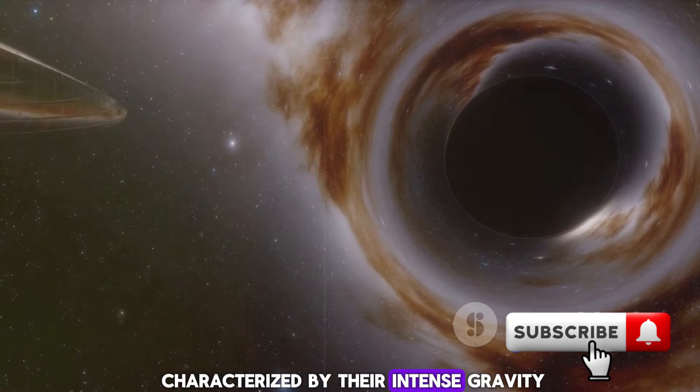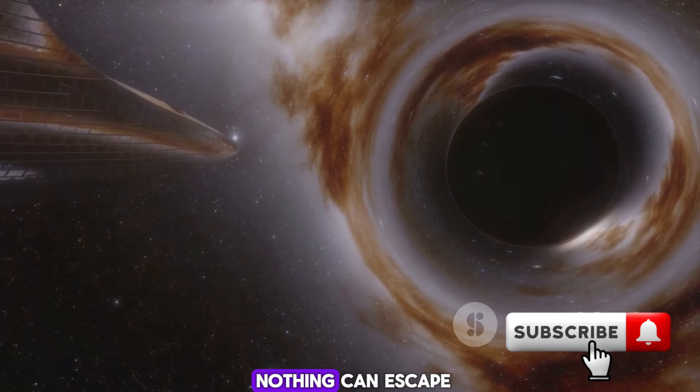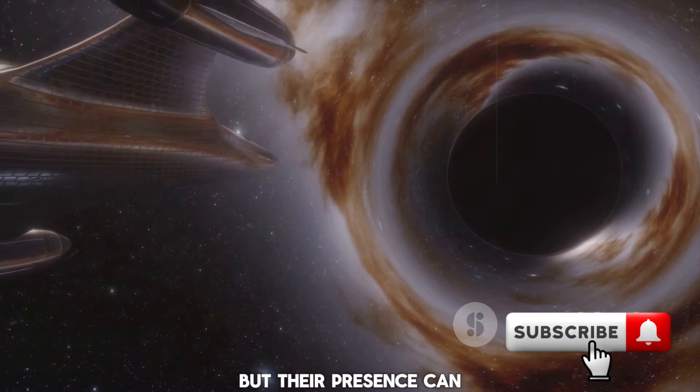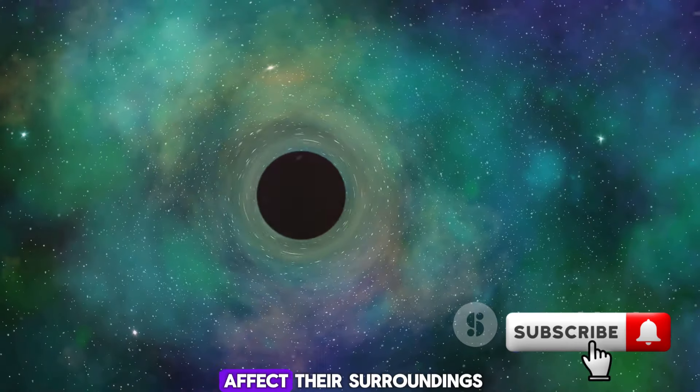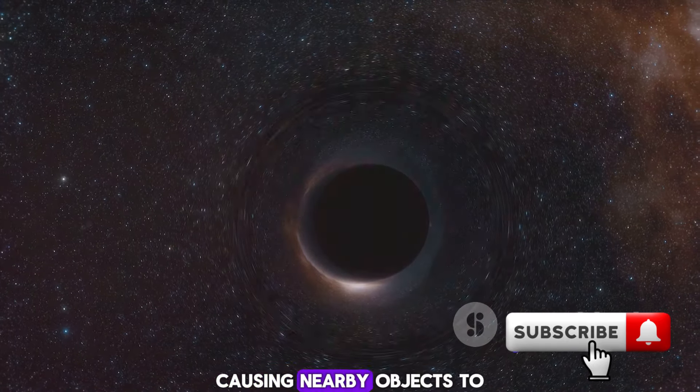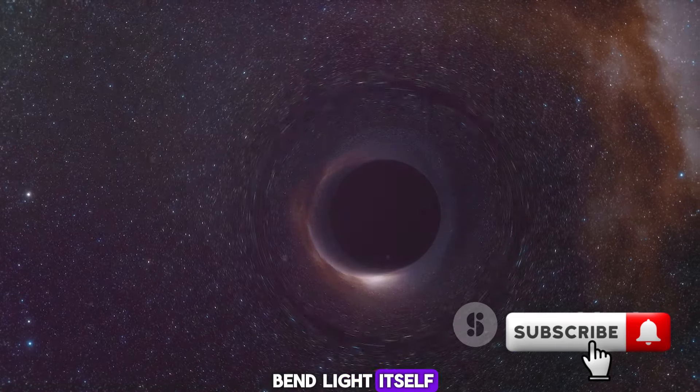Black holes are characterized by their intense gravity and the event horizon, a boundary beyond which nothing can escape. This makes them invisible to our eyes, but their presence can be detected by the way they affect their surroundings. They distort the space around them, causing nearby objects to move in peculiar ways, and they can even bend light itself.